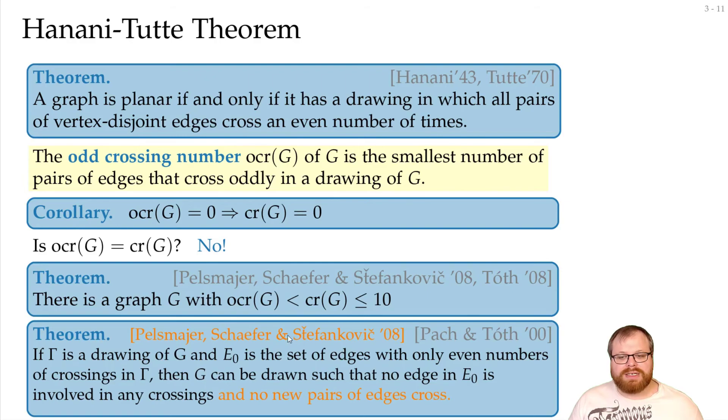And Pilsmeyer, Schaefer, Stefankovic extended this, that they also could show that we don't introduce new pairs of edges that cross. So we can do something, but we cannot do everything.